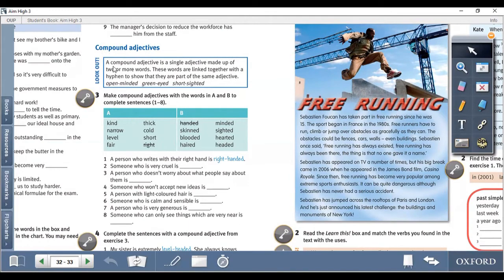Now compound adjectives. A compound adjective is a single adjective made up of two or more words. These words are linked together with a hyphen to show that they are part of the same adjective.